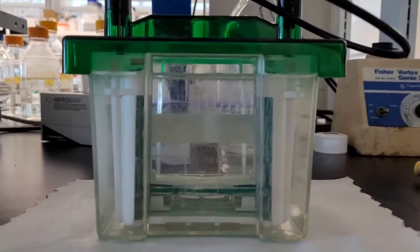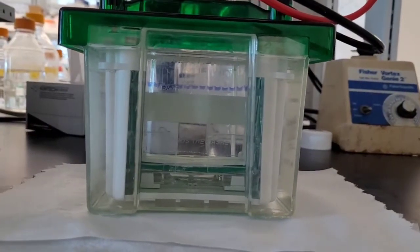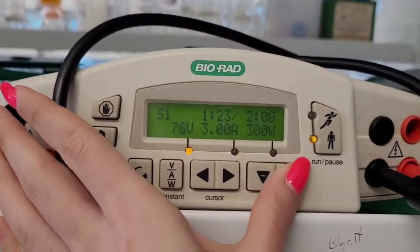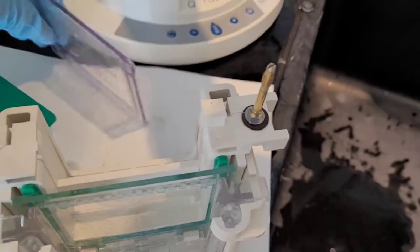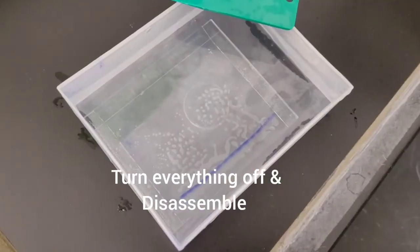You don't want to go too high too quickly or you'll get smiley bands. Once the protein enters the resolving gel, you can increase the voltage to about 80V or even higher, but based on my experience this works better.